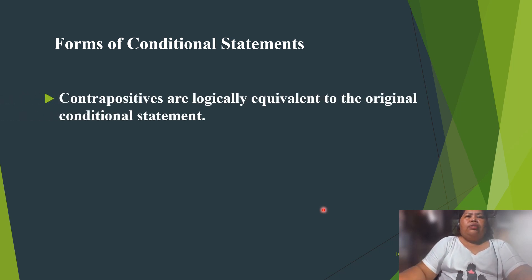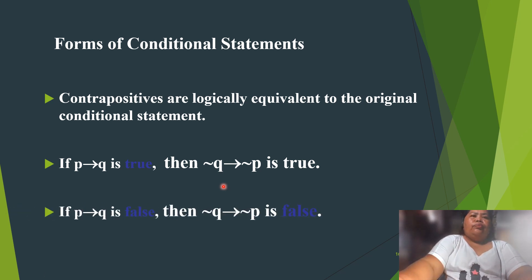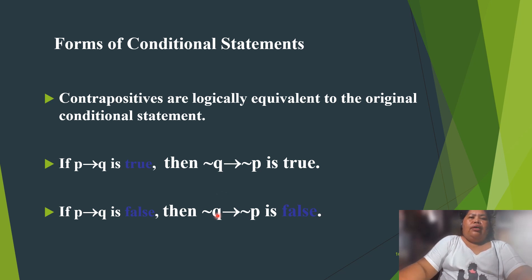Contrapositives are logically equivalent to the original conditional statement. So if P then Q is true, then not-Q implies not-P is also true. If P then Q is false, then not-Q implies not-P is also false.